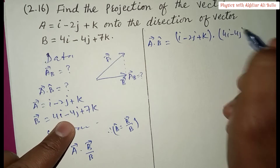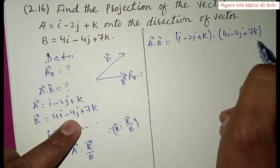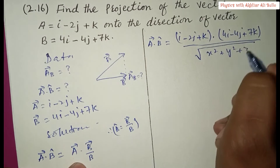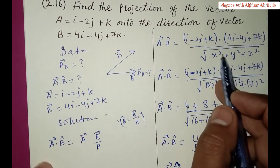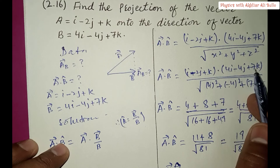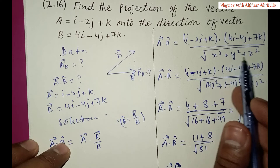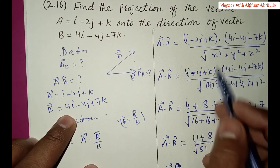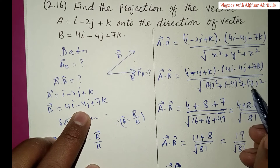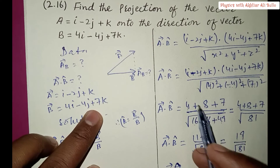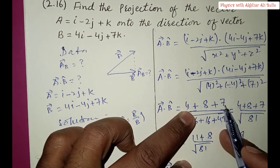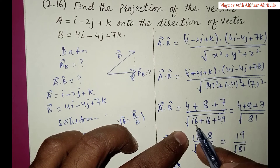So we have (i − 2j + k) · (4i − 4j + 7k) divided by the magnitude of b. The magnitude of b is the square root of x² + y² + z², which is the square root of 4² + (−4)² + 7². Computing the dot product: i·4i gives 4, (−2j)·(−4j) gives +8, and k·7k gives 7.